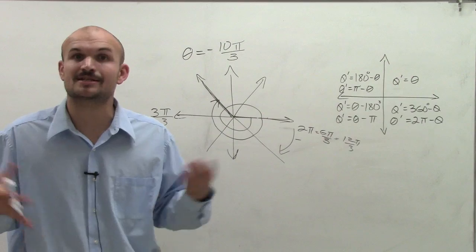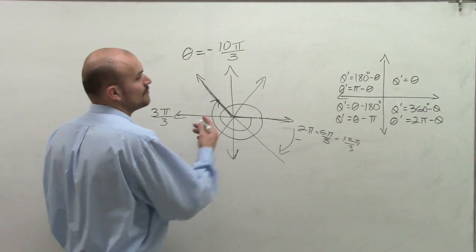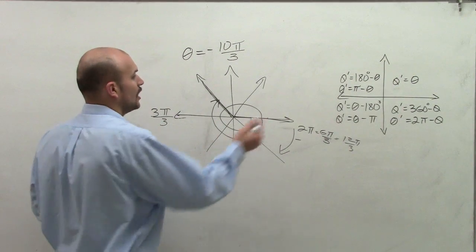So what I'm going to do is I'm going to keep on adding coterminal angles until I have a positive angle that's less than 360 or 2 pi. So to do that, remember, I can add multiples of 2 pi.